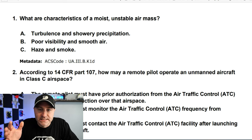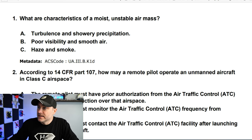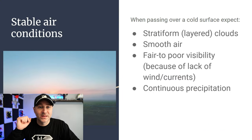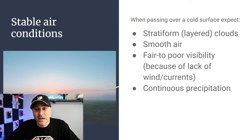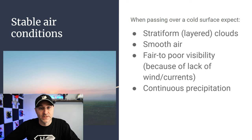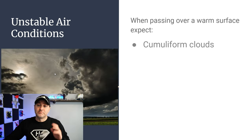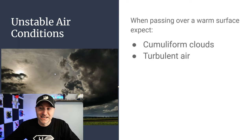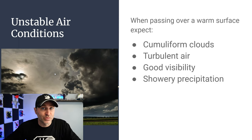What are the characteristics of a moist, unstable air mass? The answer is A. Here are things that go along with stable air conditions: layered clouds, smooth air, poor visibility because the wind's not pushing things away — you may see haze or fog — and continued precipitation. When looking at unstable air, we're looking for dangerous towering clouds, turbulent air, good visibility, and showery precipitation.